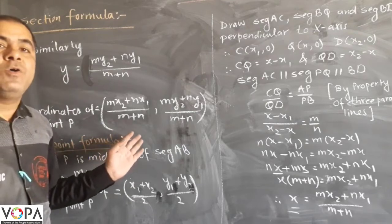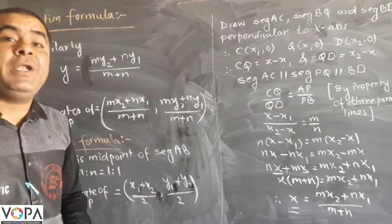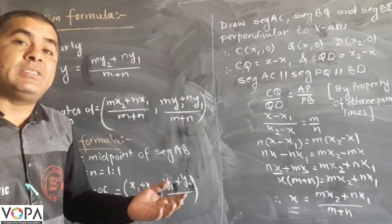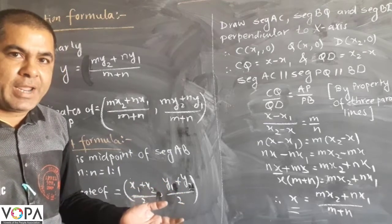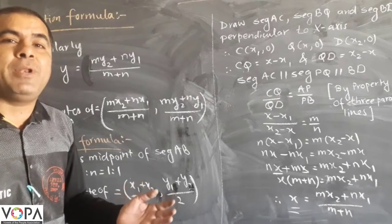Using this formula, we can find the coordinate of point P which divides segment AB if we know the coordinates of point A and B and the ratio M:N.